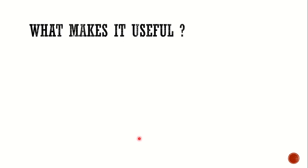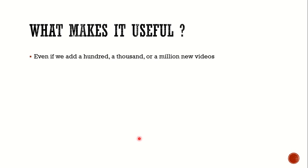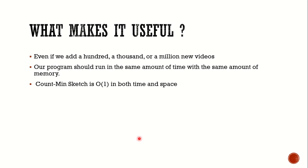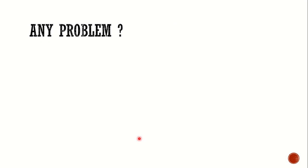What makes Count Min Sketch really useful is that even if we have a hundred, a thousand, or a million new videos, our program runs in the same amount of time with the same amount of memory. That is, Count Min Sketch has O(1) complexity both in terms of time and in terms of space.